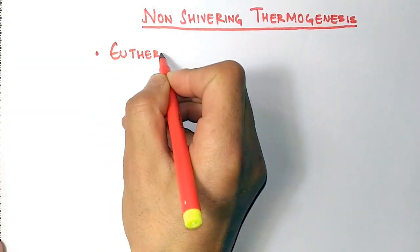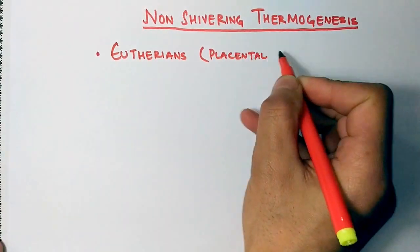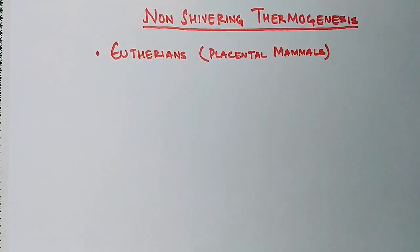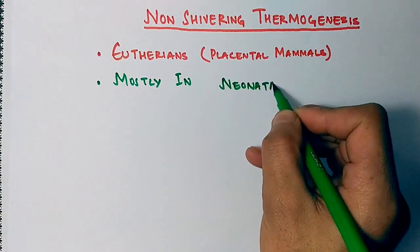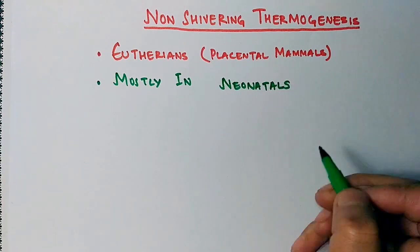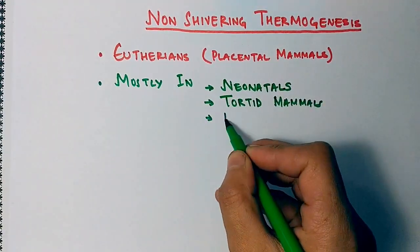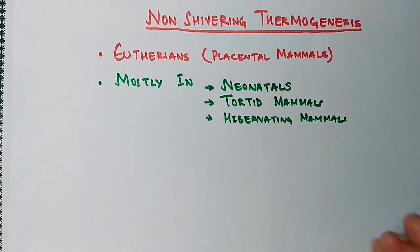First of all, non-shivering thermogenesis occurs in eutherians, what we call placental mammals. It does not occur in all placental mammals; rather it occurs in newborn animals, what we call neonates. It also occurs in torpid mammals which go into a torpor state, as well as in hibernating mammals.